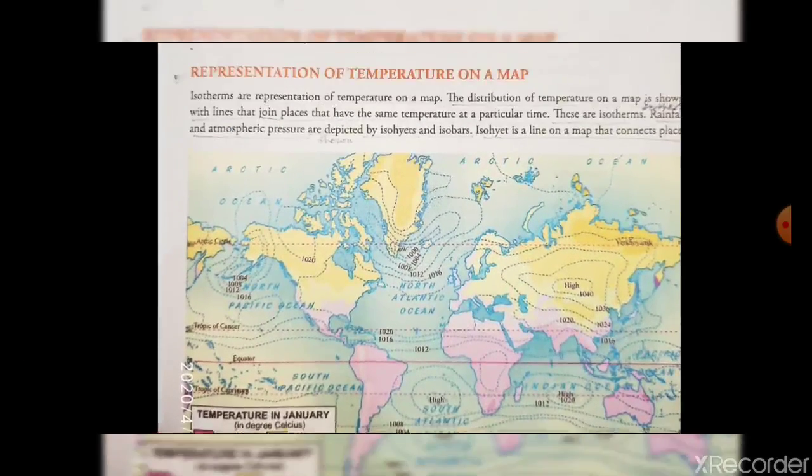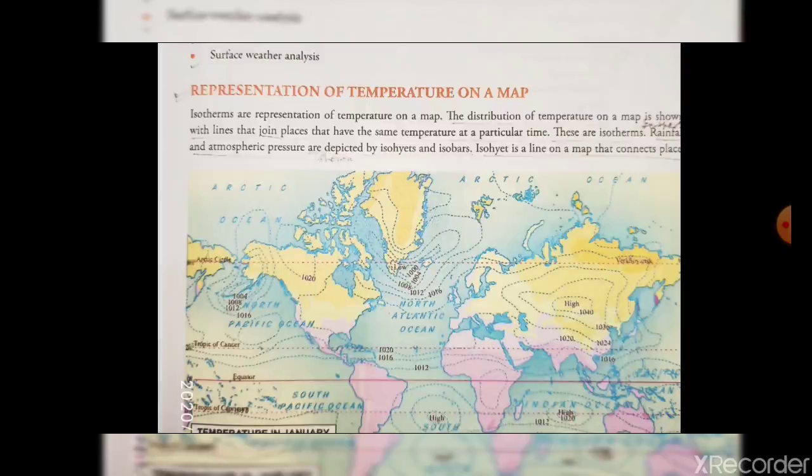Now, let us learn the representation of temperatures on a map. The distribution of temperature on a map is shown with lines that join places that have the same temperature at a particular time. This is an isotherm.